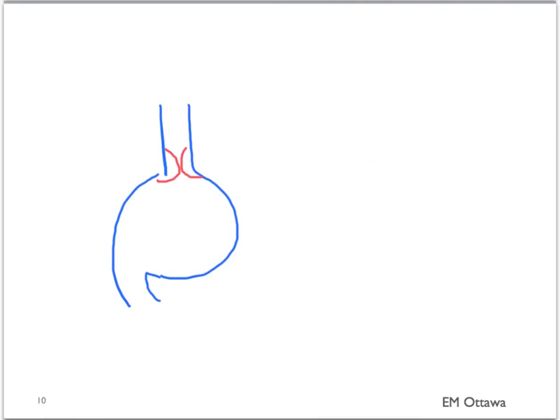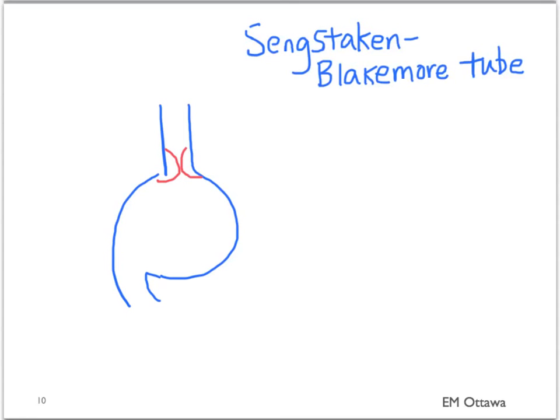If none of these work, the last resort for bleeding varices is a Blakemore tube. It is a tube inserted like a nasogastric tube, and its main function is a balloon that tamponades the esophageal varices.